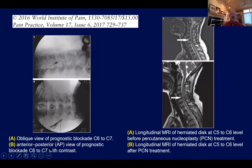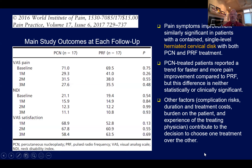Additional views show the C6-C7 prognostic blockade in AP view. On MRI taken sometime after the procedure, the herniated intervertebral disc at the C5-C6 level is clearly visible. This shows the disc before percutaneous nucleoplasty treatment and after, demonstrating the relative change in herniation size before and after treatment.